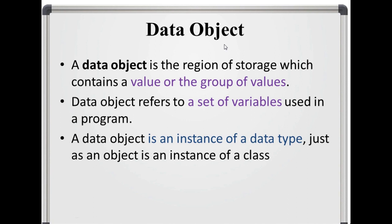What is data object? Data object is a region of storage which contains a value. Like an instance of a class, like an object, it is an instance of data type.